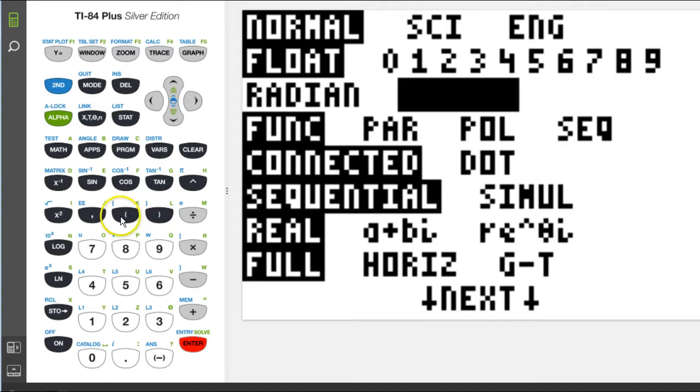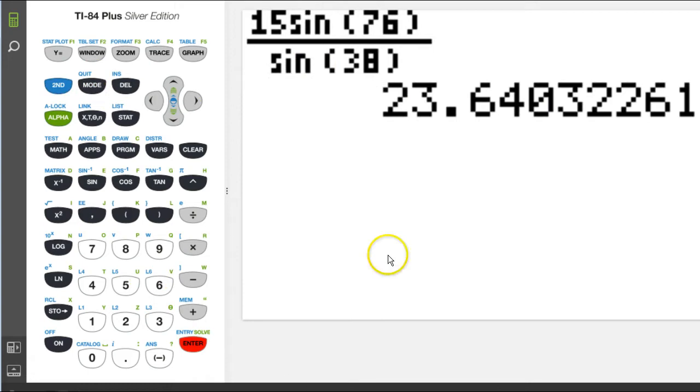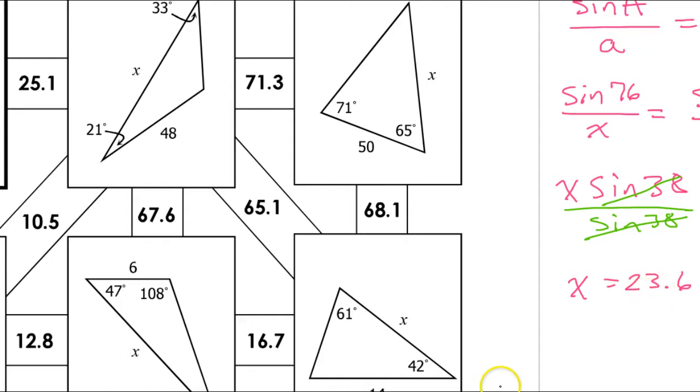So I'm going to hit enter. And now I'll go back. So I've got 23.6. I'm going to round to the nearest tenth. So there you go.